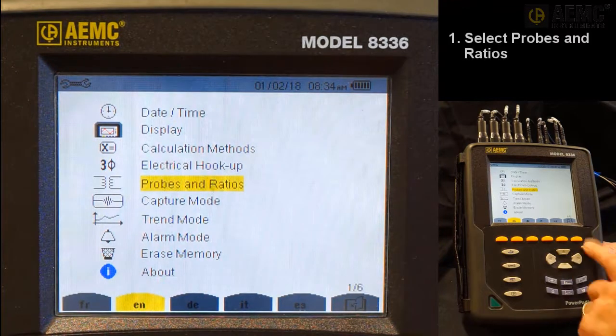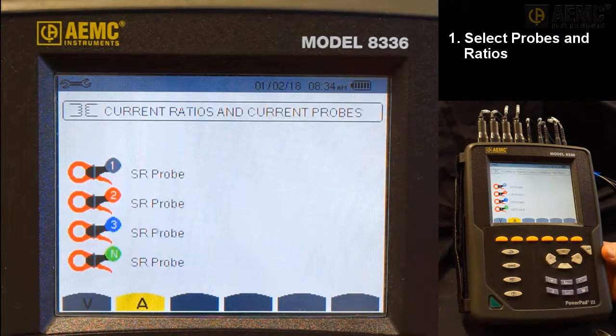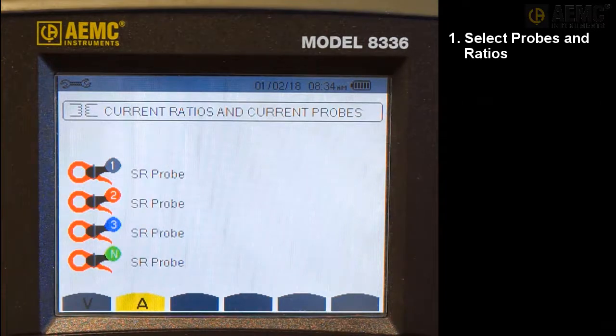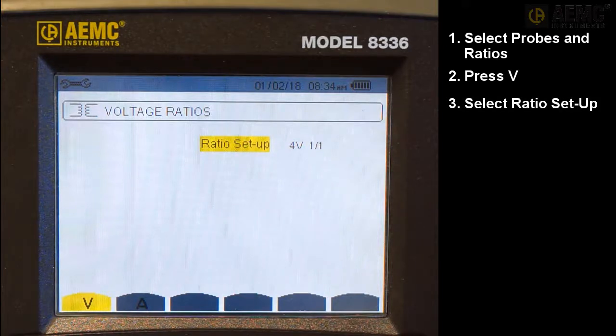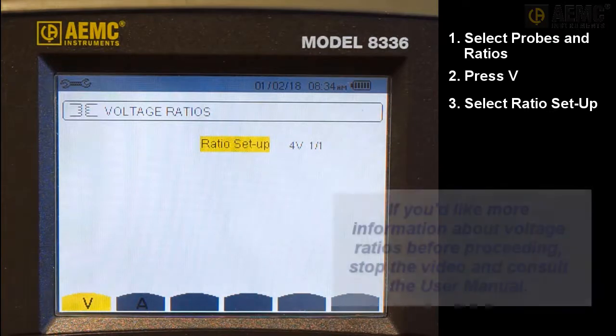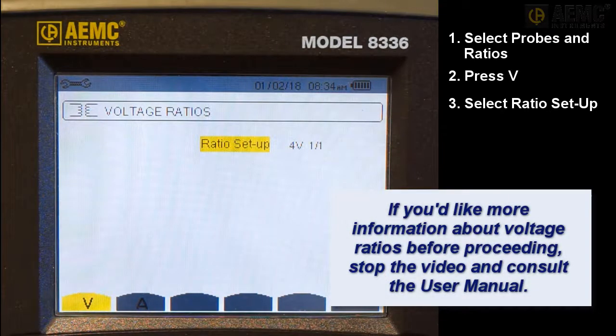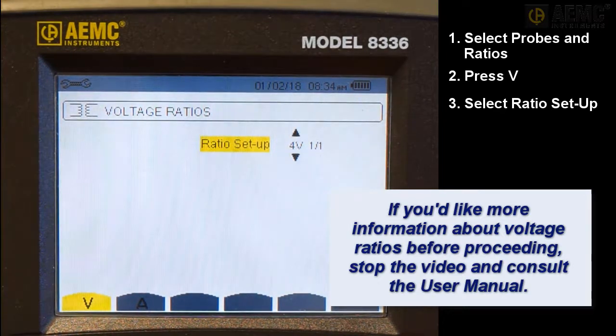Use the arrows to navigate to probes and ratios, and press Enter. This screen lists all connected sensors, which are automatically detected and identified by the instrument. Press the first yellow button on the left, under the V icon, to display the Voltage Ratio screen. This lets you select the primary to secondary ratio for voltage channels. You can also choose whether to use the same ratio for every line or assign a unique ratio for each. By default, the Ratio Setup field is highlighted. Press Enter to select this setting and use the arrow buttons to change it.